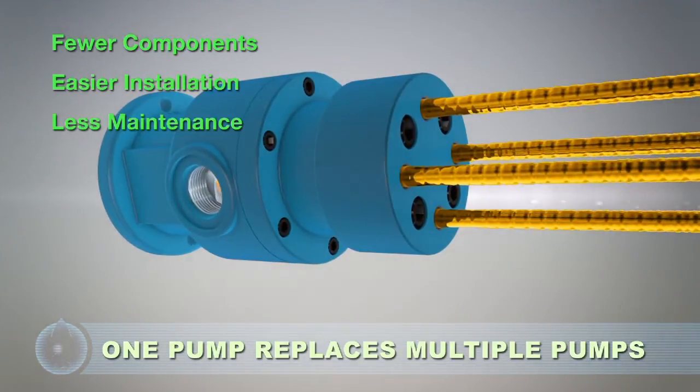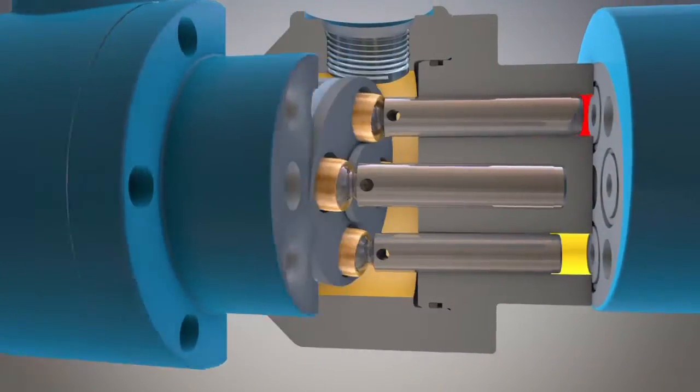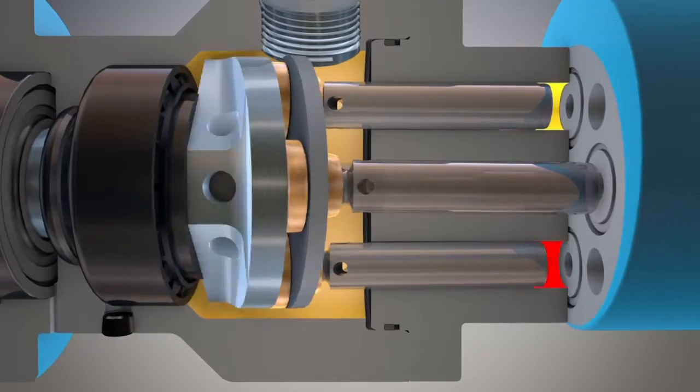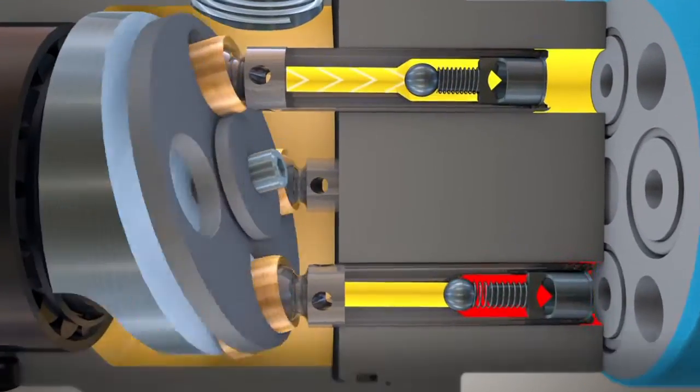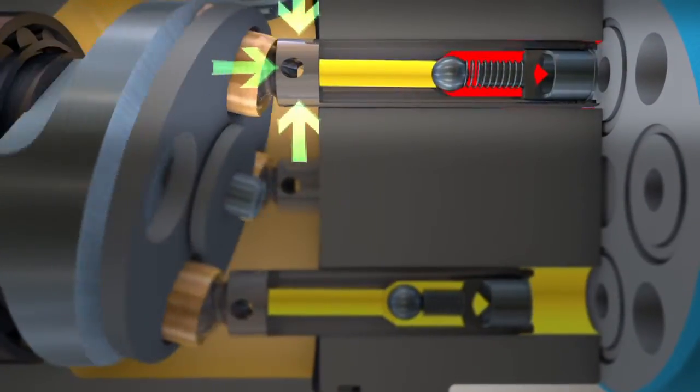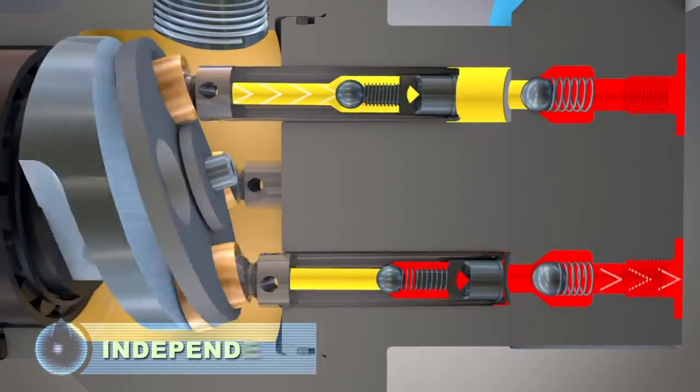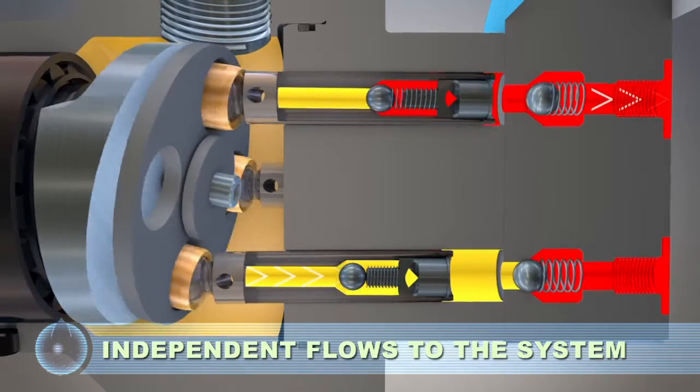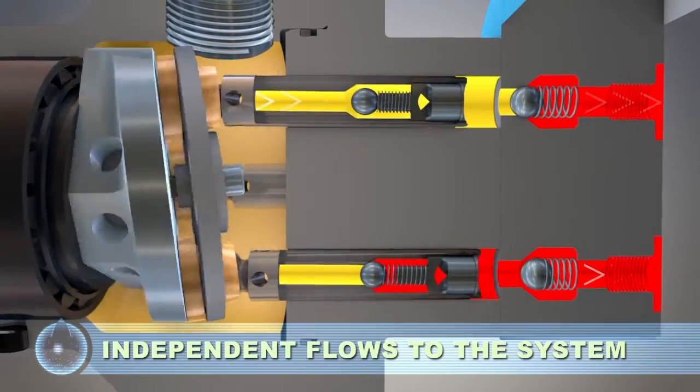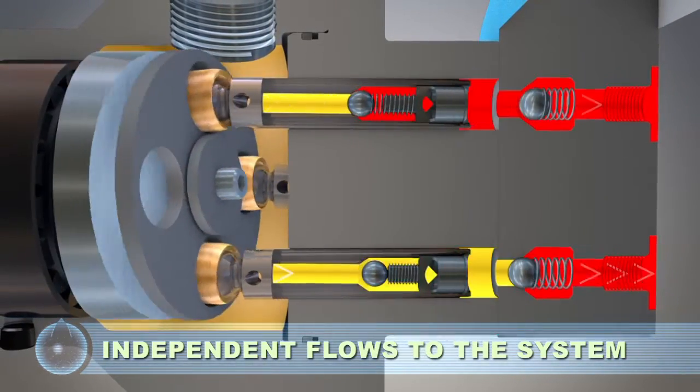Piston check valves isolate each pumping chamber, allowing the output of each piston to be used separately. Each piston acts like a miniature pumping unit with the outputs grouped in the pump cover. The independent flows are discharged from each of the outlets, providing smooth flow to the system.